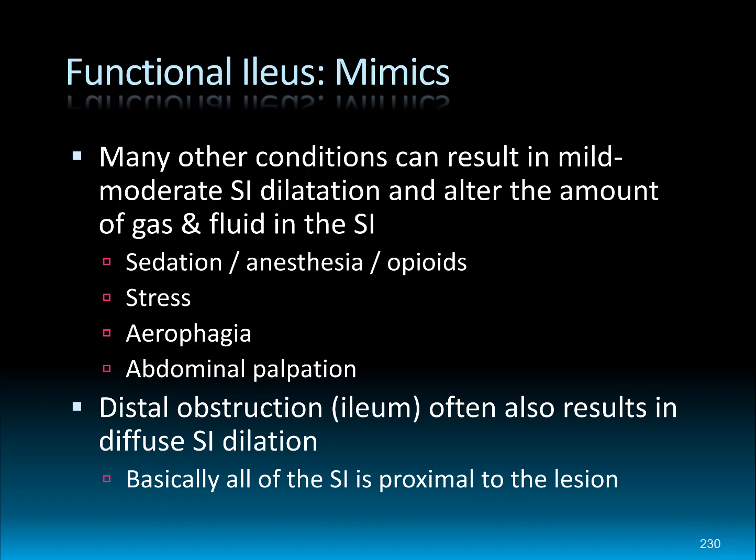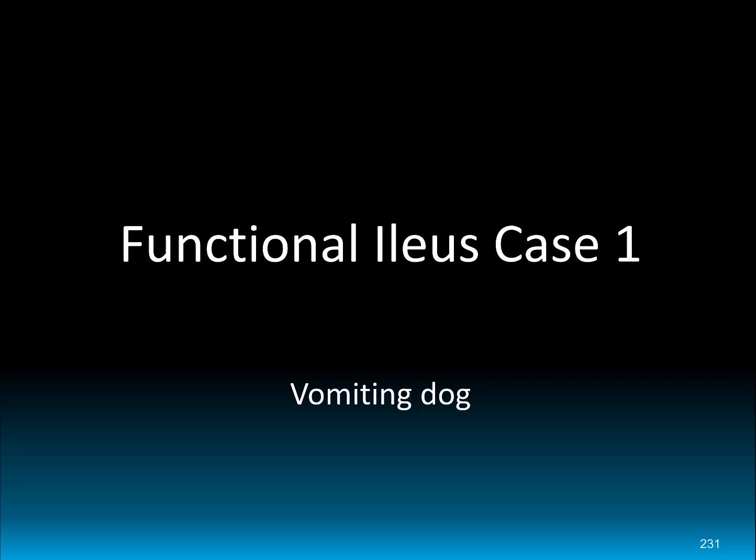Remember that we can affect the GI tract ourselves. A number of conditions give the appearance of a functional ileus that can be iatrogenic or unrelated to the patient's clinical signs — anything from sedation to stress to aerophagia from panting or respiratory disease, even the effects of abdominal palpation. These can affect gas-fluid proportions and cause mild GI distension. Also remember that a very distal small intestinal obstruction may not look as severe and can mimic a functional ileus.